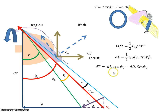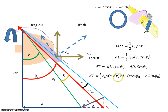Therefore, the thrust is cosine phi times the lift minus the coefficient of drag times sine phi. So this vector is made up of a component from lift and a drag component, and the total thrust in the forward direction will be lift minus that drag factor. Substituting in for the lift, the thrust is half·Cl·rho·c·dr·vr0²·(cosine phi minus epsilon·sine phi), where epsilon is the ratio of coefficient of drag to coefficient of lift.